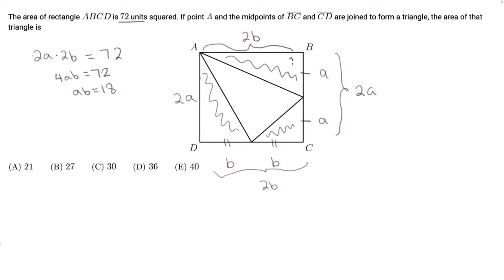For triangle number 1, the area of triangle 1 is half times the base 2b times the height, which is a.